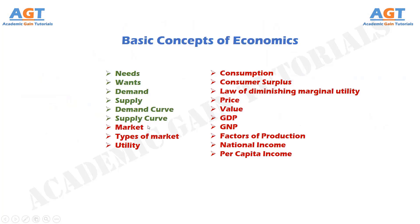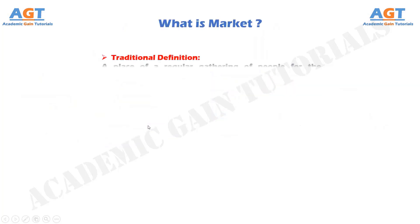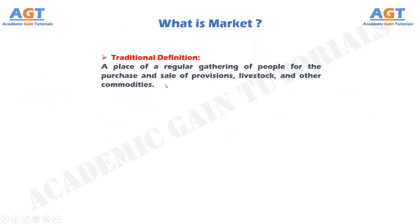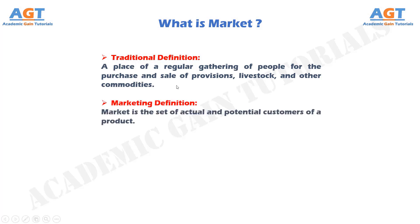By the traditional definition, market is a place of a regular gathering of people for the purchase and sale of provisions, livestock, and other commodities. By the marketing definition, market is the set of actual and potential customers of a product.